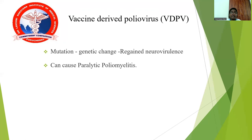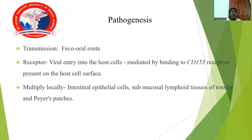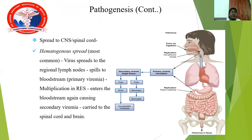Regarding pathogenesis, poliomyelitis is caused by polioviruses transmitted by the feco-oral route. The virus enters host cells via CD-155 receptors on the host cell surface. The virus then enters the human body and multiplies locally in the intestinal epithelial cells, submucosa, and lymphoid tissue of tonsils and Peyer's patches. The virus then spreads to the central nervous system and spinal cord via hematogenous spread.